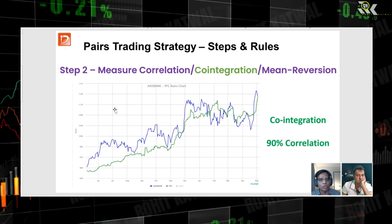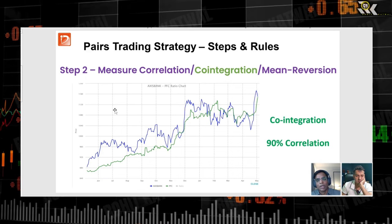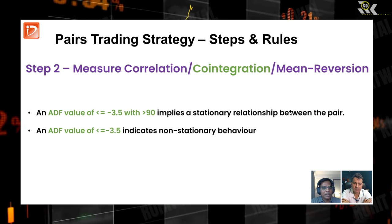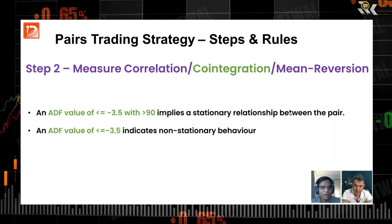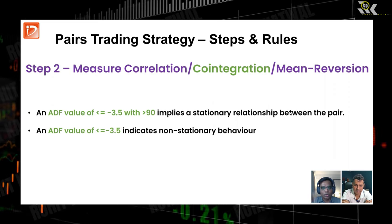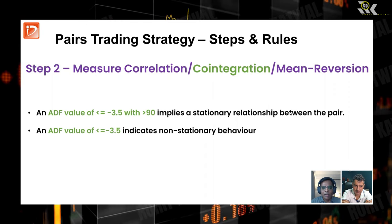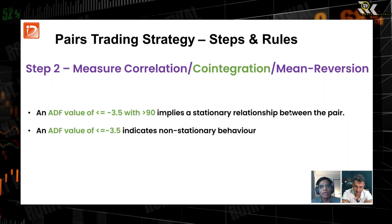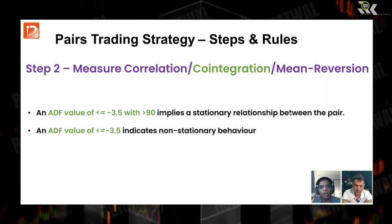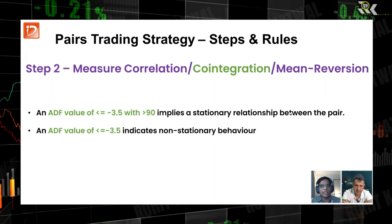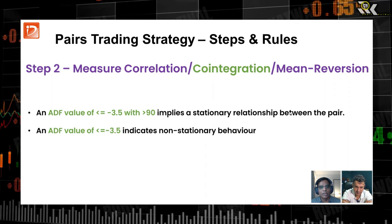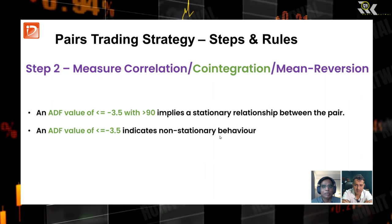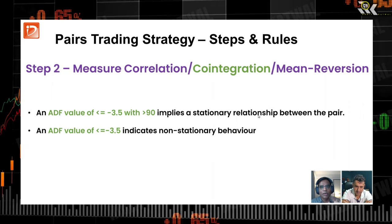For cointegration, it's more difficult — you need a little bit of coding knowledge. There is a statistical formula called the Augmented Dickey-Fuller test, or ADF. When we apply this test to the log prices of stock A and stock B — taking the spread between those log prices — we get a value that should be less than or equal to minus 3.5, and the confidence should be greater than 90%, to imply a stationary relationship between that pair. If the value is greater than minus 3.5, that indicates non-stationary behavior — and we always want stationary behavior.